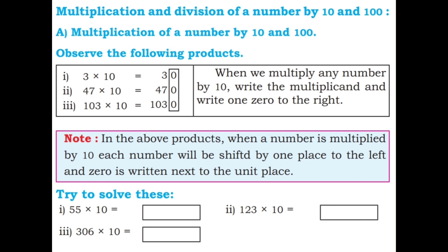Next: Multiplication and Division of a number by 10 and 100. First, Multiplication of a number by 10 and 100. Observe the following products. 3 into 10: write 3 then append 0, so 30. 47 into 10: 47 ones are 47, append 0, so 470. 103 into 10: 103 ones are 103, append 0, so 1030. When we multiply any number by 10, write the multiplicand and write one zero to the right.